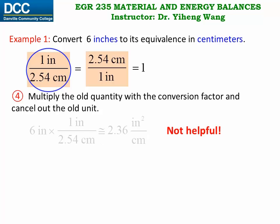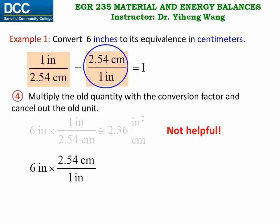Therefore, we should not choose that one, but this one instead. Through practice, this choice should become very obvious to you, because now inch — the old unit that we no longer want — can be easily canceled out in the equation. And we are left with 15.24 in the unit of centimeter, the desired unit.